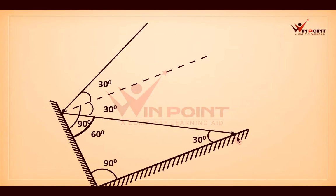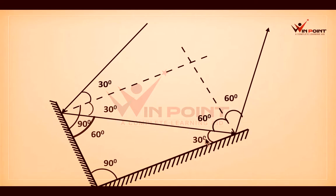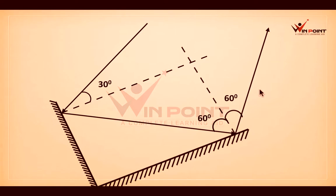When the light strikes this second mirror, there will be reflection. We are drawing a normal here. The angle between this normal and the incident ray: it is 30 degrees, and the total angle is 90 degrees, so the angle of incidence is 60 degrees. Angle of incidence equals angle of reflection, so that angle is also 60 degrees. We can conclude that if the angle of incidence is 30 degrees on the first mirror, from the second mirror it will reflect with an angle of 60 degrees.